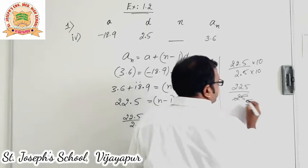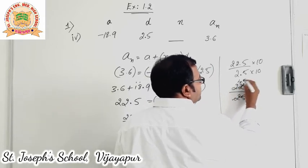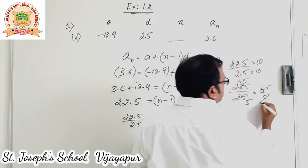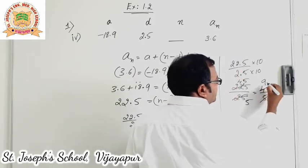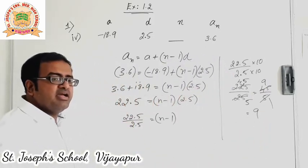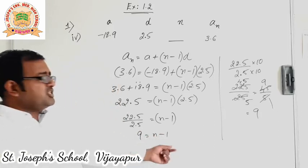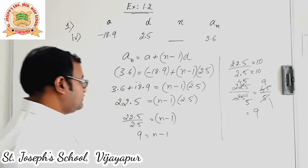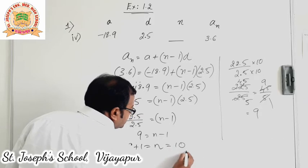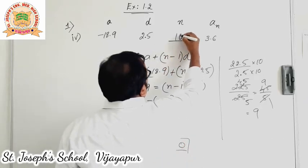25 goes into 225: 5 fours are 20, remainder 2, then 5 fives are 25, giving 45 upon 5. 45 divided by 5: 5 nines are 45, so the answer is 9. We know the value of 22.5 by 2.5 is 9, which is equal to n minus 1. Minus 1 comes to the other side as plus 1, so 9 plus 1 is equal to n, which is 10. We got the value of n and can fill it in the blank.